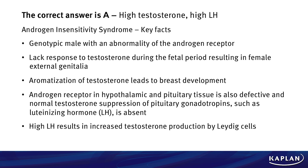Let's review. It's a genotypic male with an abnormality of the androgen receptor. They lack response to testosterone during the fetal period, which results in female external genitalia. Aromatization of testosterone leads to the normal breast development seen in our patient. Androgen receptors in the hypothalamic and pituitary tissue are also defective, and thus the testosterone that normally suppresses the pituitary gonadotropes doesn't. LH is also going to be elevated — there is no suppression — so you have high testosterone and high LH. That high LH results in high testosterone produced by the Leydig cells of the testes.